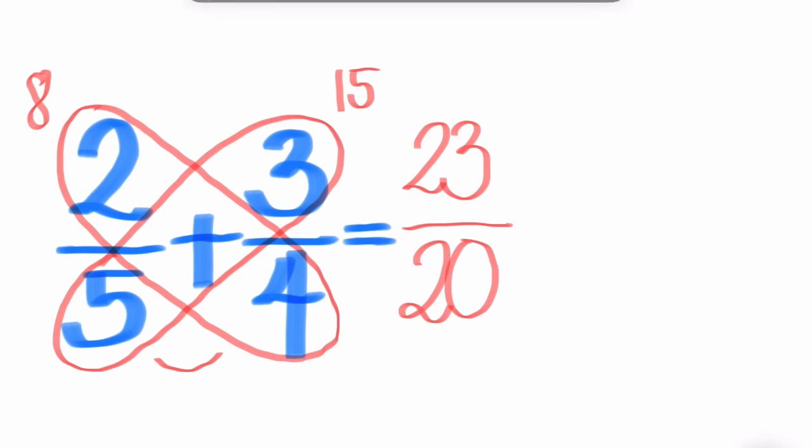Step number five. If the fraction is already in the lowest term, that is already the final answer. Step number six. If the fraction is an improper fraction, do the following. A fraction is improper if the numerator is higher than the denominator.